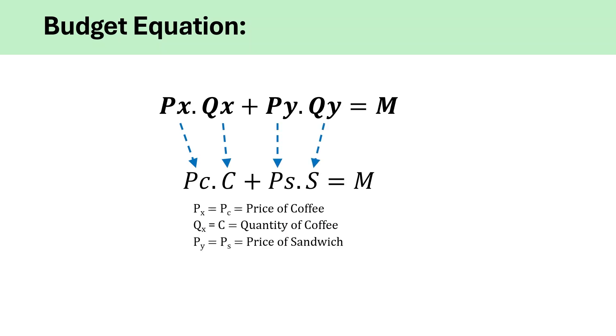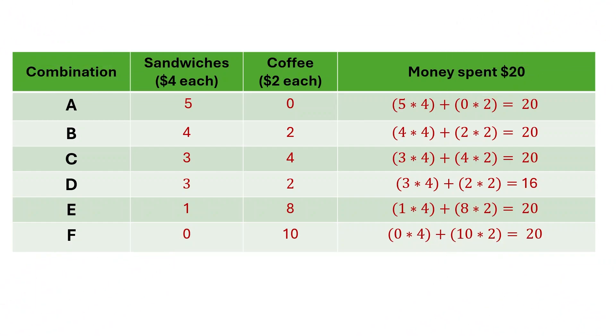We learned from the previous video that we can express the budget constraint in the form of an equation algebraically like this if we continue with our example of sandwiches and coffee. Continuing the same example, if a consumer has, let's say, a total budget of $20 to spend on two goods, sandwiches and coffee, and the price of each sandwich is $4, and each coffee costs $2.